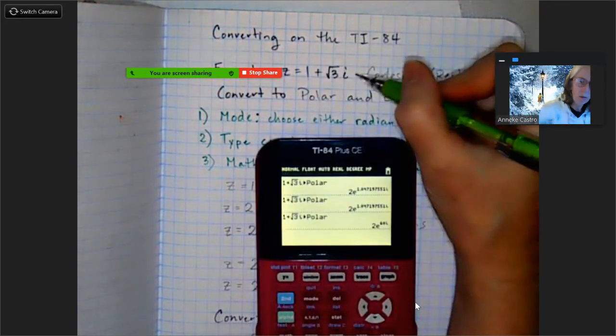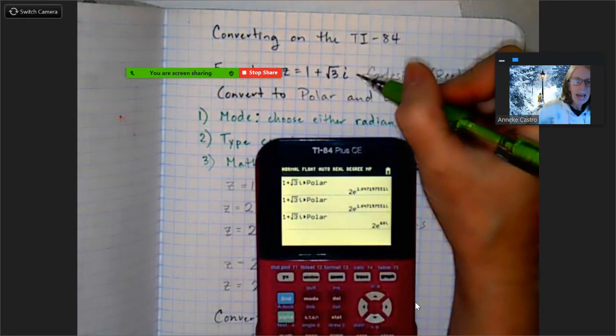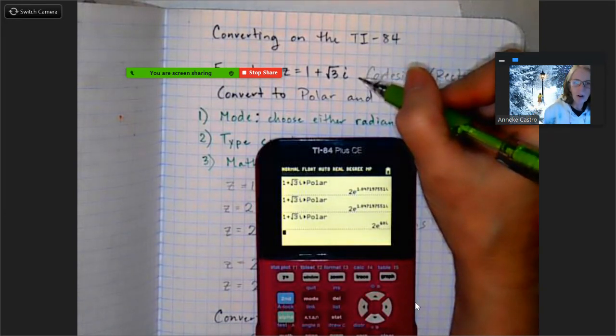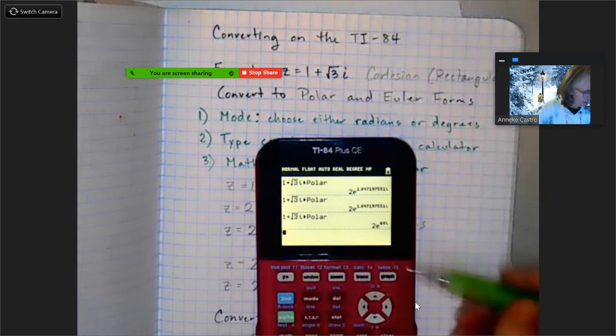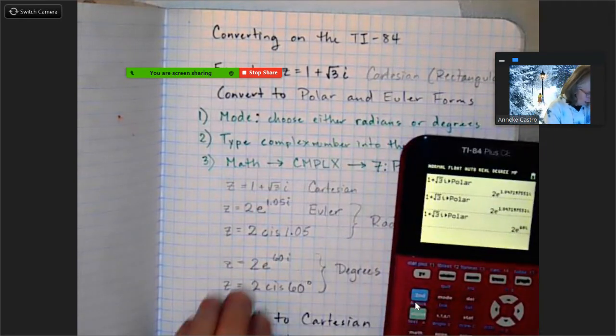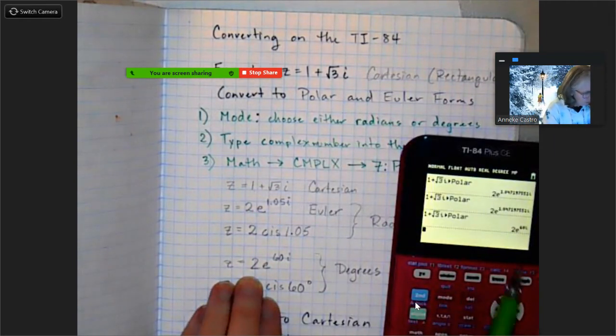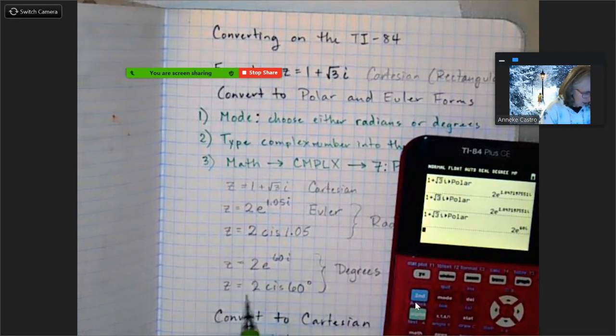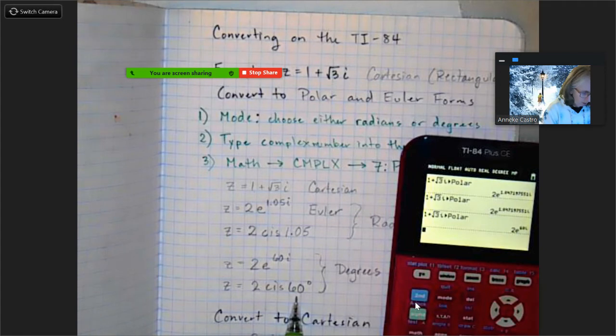Okay, now fingers crossed. Bam, there it is. So 2e^(60i). So I got this problem from the other video that you should have taken notes from already, and if you were paying attention there you know that we got an answer of π/3 radians, and π/3 radians is the same as 60 degrees. Bam, there it is on my graphing calculator. When I have my calculator in the mode set in degrees, it gives me the Euler answer with degrees: 2e^(60i), which then I can change to polar form 2 cis 60.